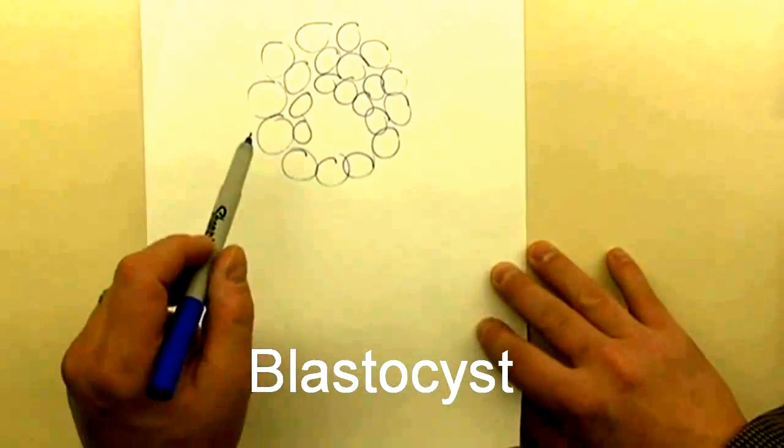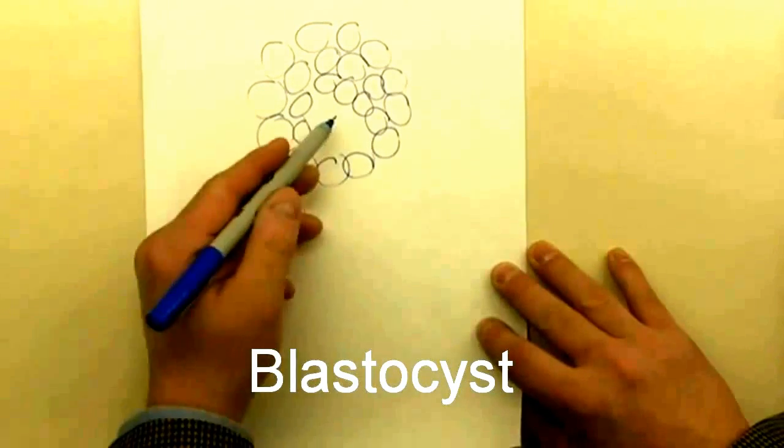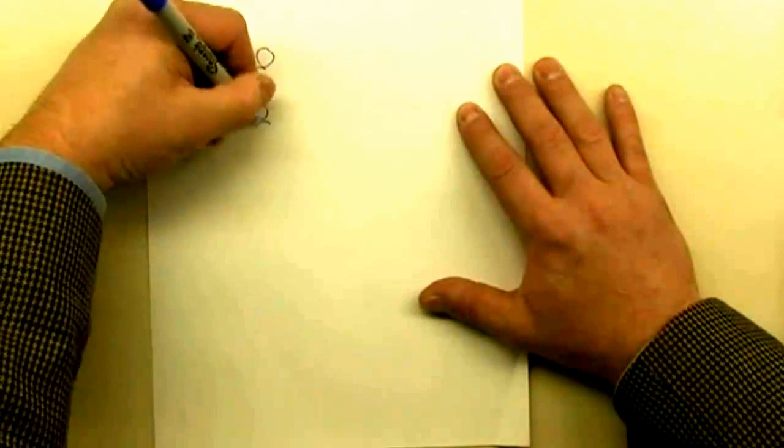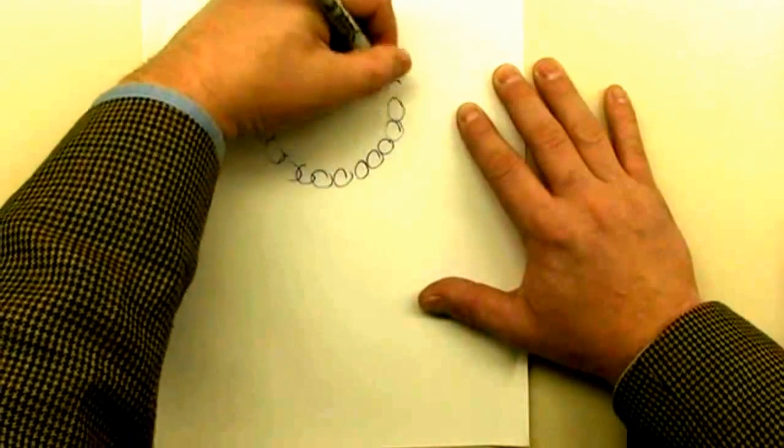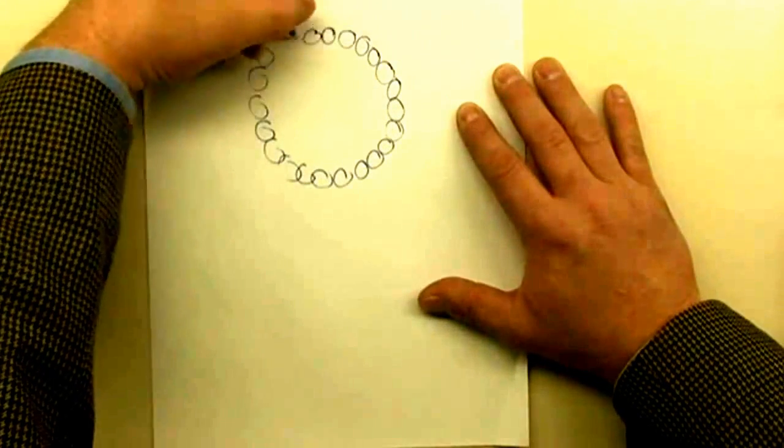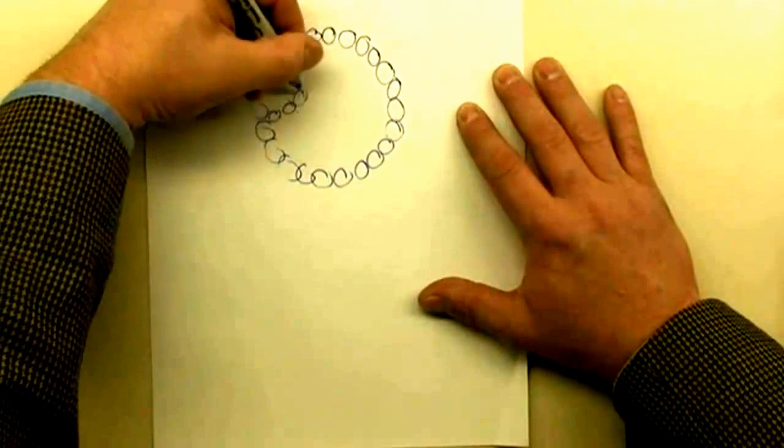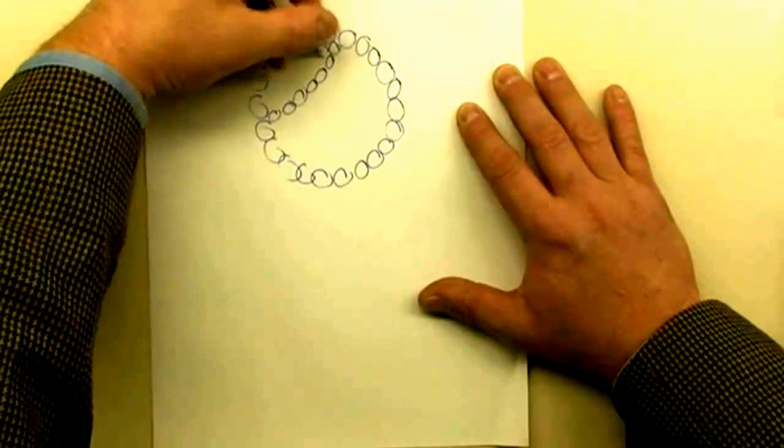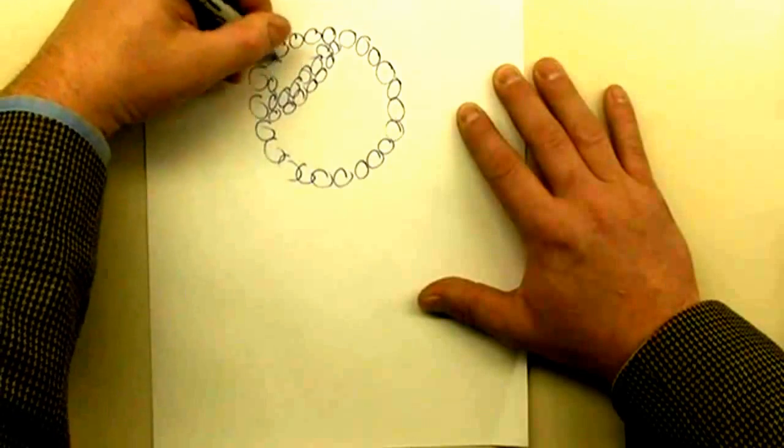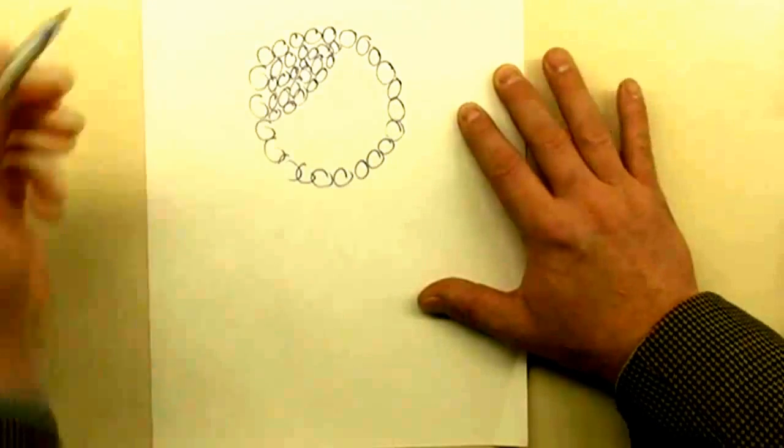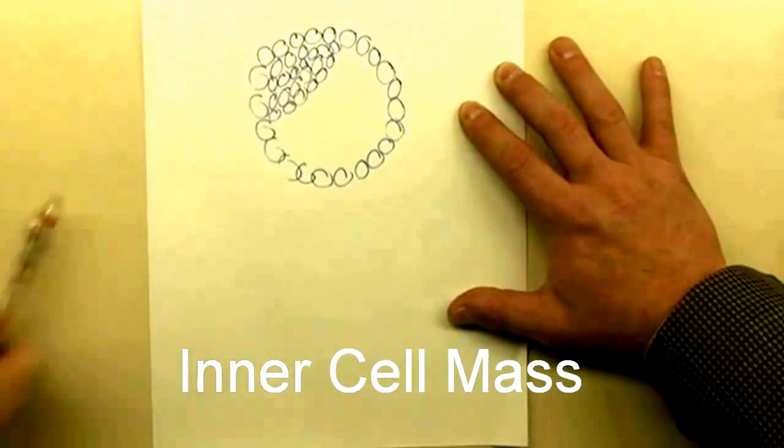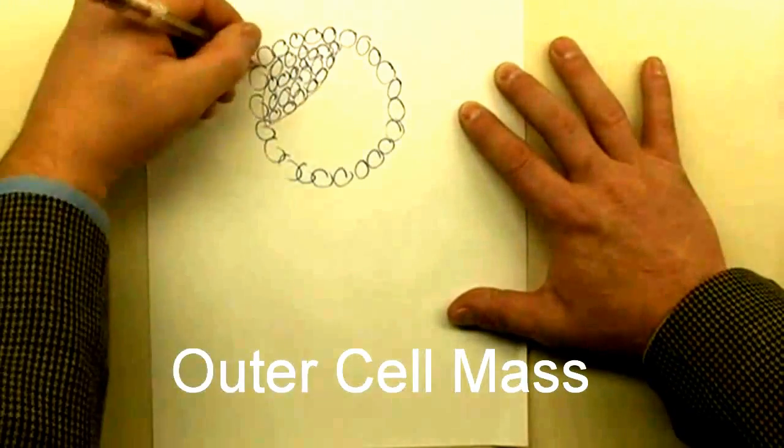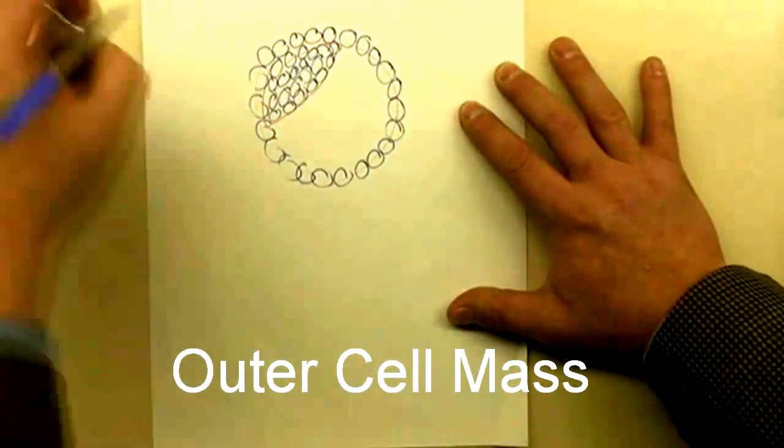At this point, instead of a morula, this is now known as a blastocyst with its blastocyst cavity. As division continues, the cavity gets larger and one group of cells gets sequestered to one end. These cells are appropriately named: an inner cell mass shown here, and an outer cell mass making up the periphery.